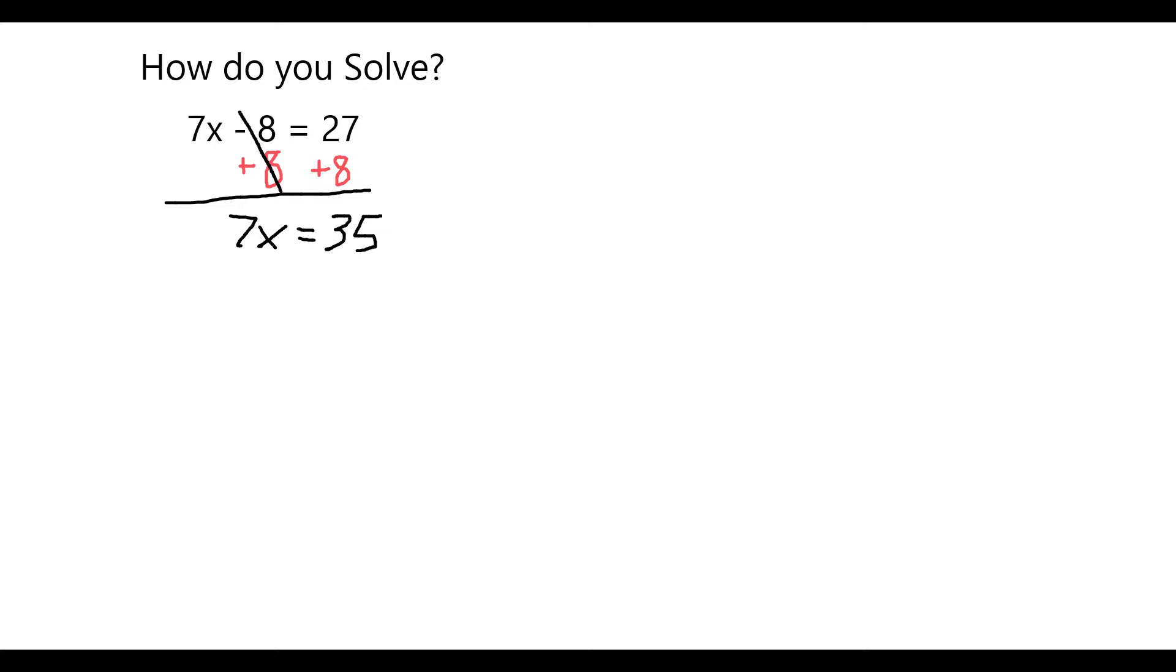Now, I have 7 times some number is equal to 35. Finding the answer to a multiplication essentially means I need to divide.